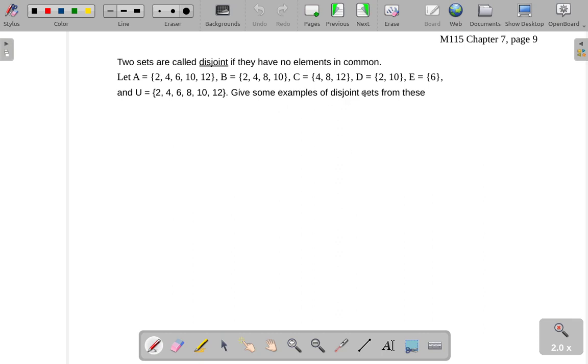If I wanted to give some examples of disjoint sets from these, well, you can see D and E would be disjoint. There's nothing in common between them.